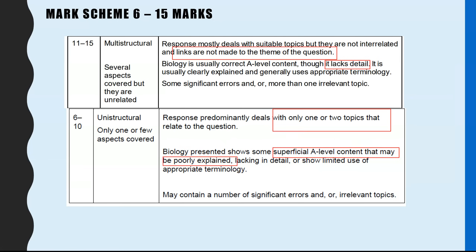Six to ten is described as unistructural, because your essay may only talk about one or maybe two topics, so you're not showing your breadth of knowledge. The biology that is presented is superficial and poorly explained, and there might still be some significant errors.